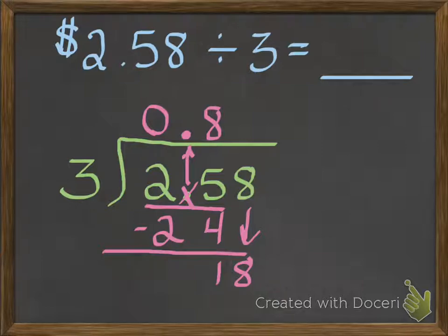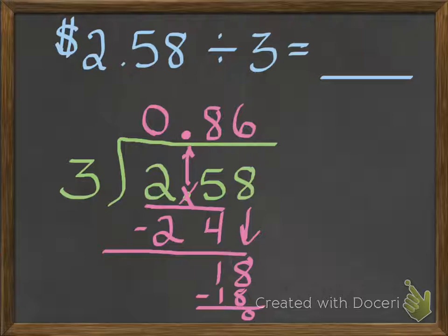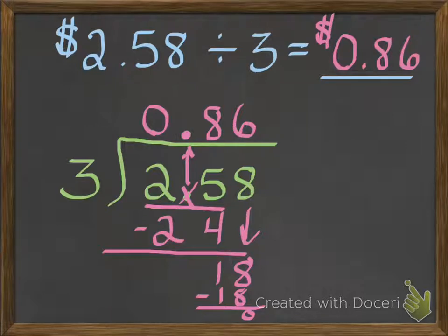Eighteen divided by three is six. Six times three is eighteen, and I have a remainder of zero. So my answer is 0.86 — each person gets eighty-six cents.